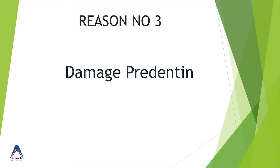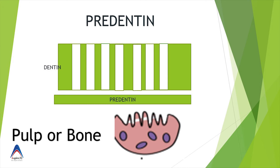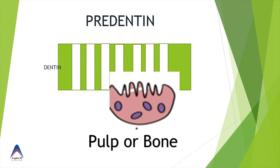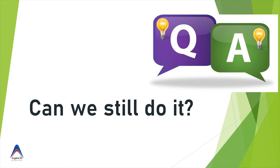The third reason is that calcium hydroxide can damage the pre-dentine layer. As mentioned earlier, pre-dentine separates the pulp from the rest of the dentine and acts as a protective layer, preventing osteoclasts from coming in and resorbing the dentine. Because of calcium hydroxide, this pre-dentine layer gets damaged, and osteo-odontoclasts can easily enter the dentine and cause resorption, leading to internal resorption.